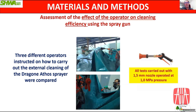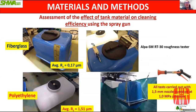Three different operators were instructed how to carry out cleaning and compared using the same spray cleaning device with the same operating parameters. Tests also compared fiberglass and polyethylene tanks of the same capacity, which were characterized by different surface roughness — the fiberglass tank was much smoother than the polyethylene one.